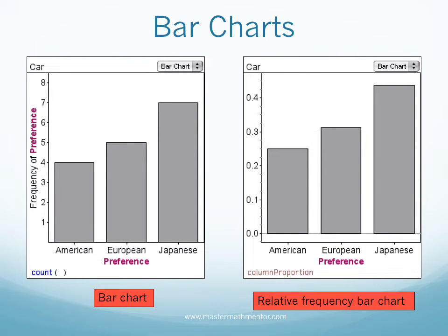Categorical data can be represented visually in graphs. One method is called a bar chart. A bar chart displays the distribution of a categorical variable with each bar's length proportional to the frequency of its represented category. A bar chart is similar to a histogram, except that there is space between the bars, which does not occur in the histogram. The relative frequency bar chart uses decimals or percentages along the vertical axis.